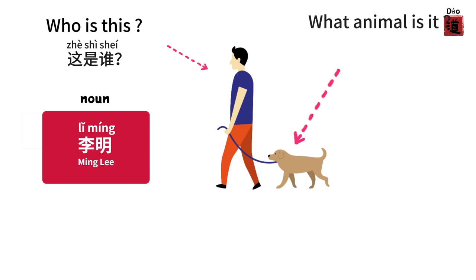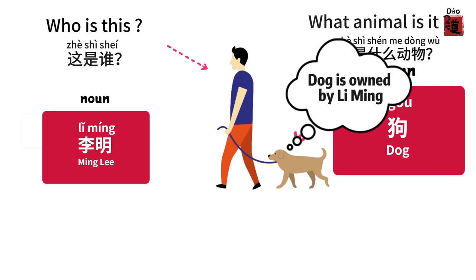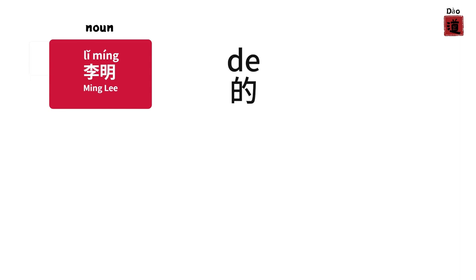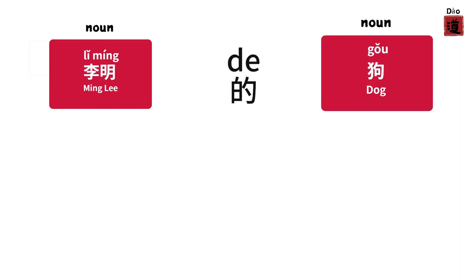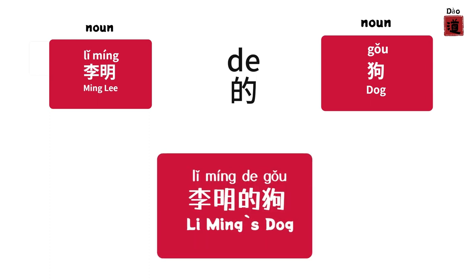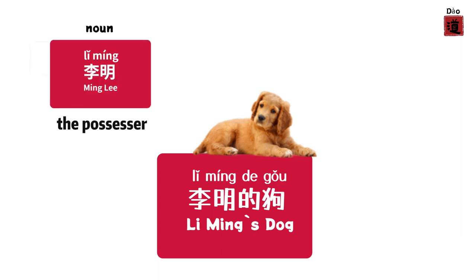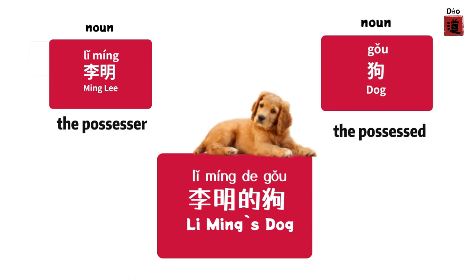What animal is it? When you want to express that this dog is owned by Liming, you can use 的 to link these two nouns together. In this example, Liming is the possessor, and the dog is the possessed.